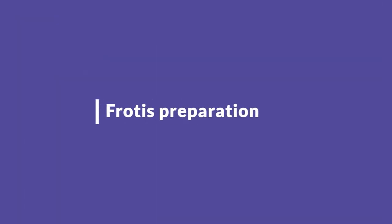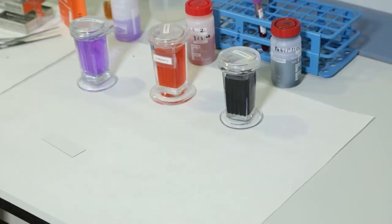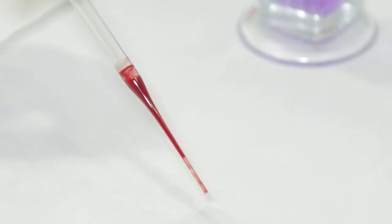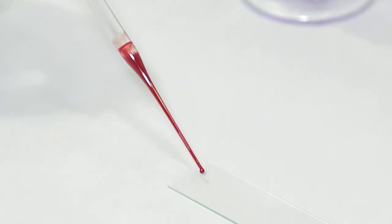Frotis preparation. The blood sample can be either obtained directly from a puncture in the finger with a lancet or by blood extraction collected in a tube with due anticoagulant. Using a Pasteur pipette, a drop of blood is placed close to the edge of the glass slide.